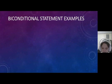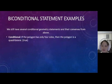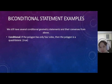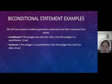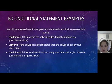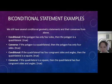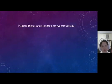Next are biconditional statement examples. We have several conditional geometric statements and their converses. Number one: the conditional — if the polygon has only four sides, then the polygon is a quadrilateral — is true. Its converse — if the polygon is a quadrilateral, then the polygon has only four sides — is also true. Another conditional: if the quadrilateral has four congruent sides and angles, then the quadrilateral is a square — also true. Its converse: if the quadrilateral is a square, then the quadrilateral has four congruent sides and angles — also true. The biconditional statements for these two sets would be: